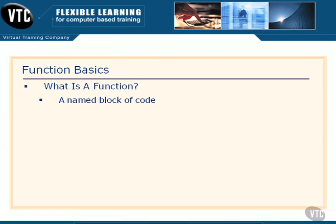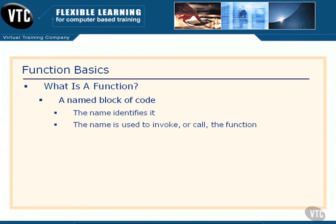A function is a named block of code. The name we give this block of code identifies that code, and then we use that name to invoke or to call the function. In other words, whenever we want all these lines of code to be executed, we simply put the name of the function in our code, and the compiler knows to go find that particular group of code that's been named and to run it.